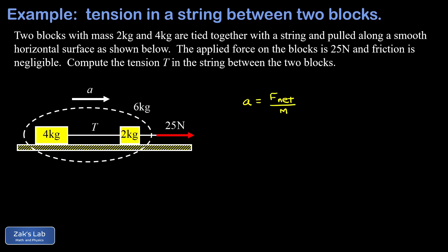You may be used to seeing this as F net equals ma, but I solve for the acceleration there. And the net force on this collected 6 kilograms of mass is 25 newtons pulling to the right. The total mass that's being accelerated here is 6 kilograms.